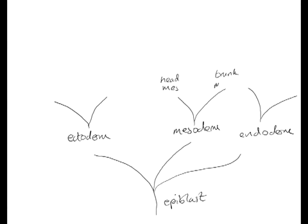For example, head and trunk mesoderm would be produced by further differentiation of a mesoderm progenitor, while surface and neural ectoderm would emerge from an ectoderm progenitor.